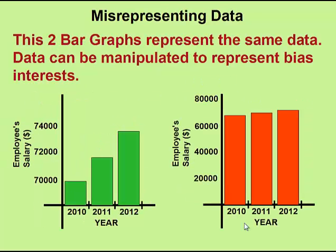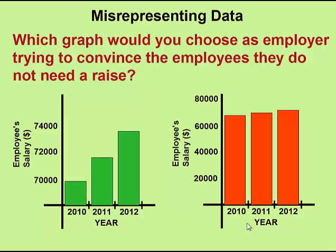Believe it or not, these two bar graphs represent the exact same data. Look at them very carefully and see why they appear to be different. If you notice on the vertical axis for the green bar graph, it doesn't start at zero and it goes up by 2,000 at a time, which is not a big number when you compare that we're dealing with 70,000. The red bar graph, on the other hand, starts at zero and counts by 20,000 — ten times as much.